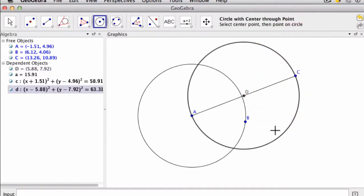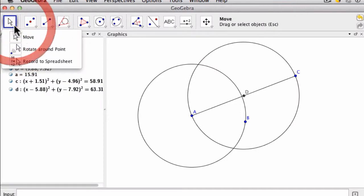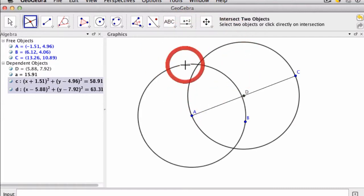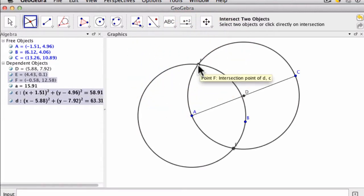And now I'm ready to create my tangent lines. All I need to do at this point is intersect my two circles. So I go right here, this circle and that circle, and notice it intersects at two points, F and E.